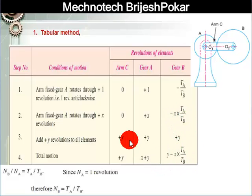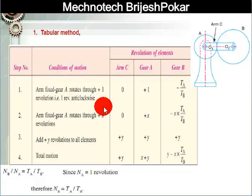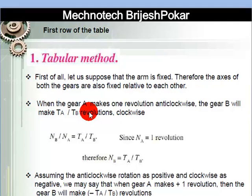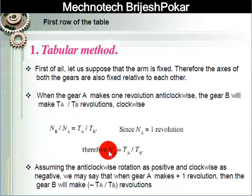By using this table we can calculate examples and find out the velocity ratio. So Nb = Ta/Tb — this is what the tabular method gives us.